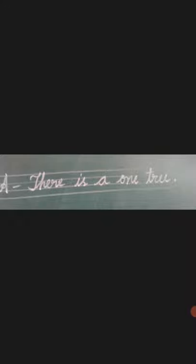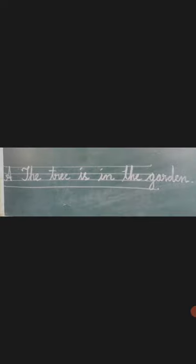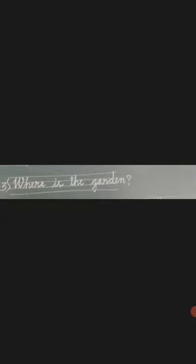There is one tree. Where is the tree? One tree is very big. The tree is in the garden. Where is the garden? The garden is in my village.